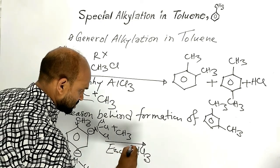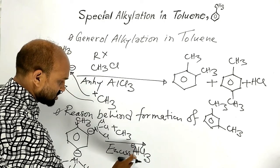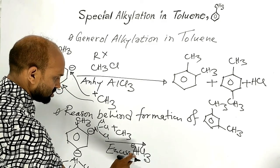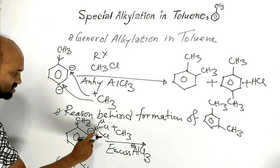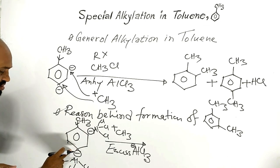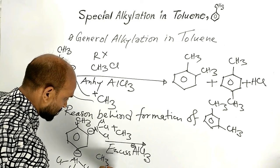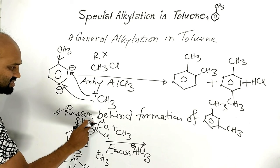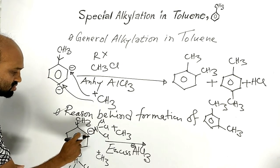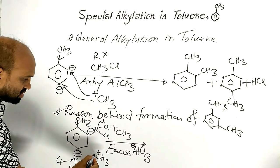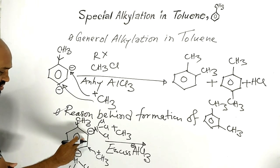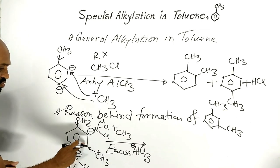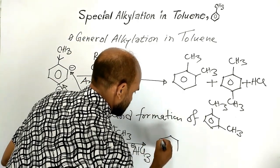Aluminum chloride blocks ortho and para positions because it is not octet fulfilled — aluminum has a shortage of electrons and has a positive character. Because of this tendency, aluminum chloride coordinates to the electron-rich ortho and para positions, blocking them. As a result, the methyl carbocation cannot attack those positions, and the meta position becomes favored and suitable for attack.